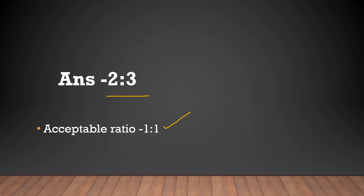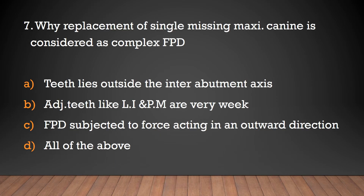Why is replacement of a single missing maxillary canine considered a complex FPD? The tooth lies outside the inter-abutment axis; adjacent teeth like the lateral incisor and premolar are very weak; the FPD is subjected to forces acting in an outward direction — all of the above. The answer is all of the above.